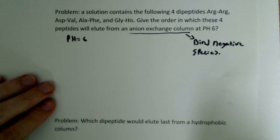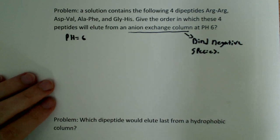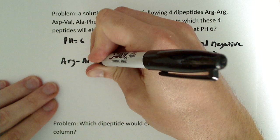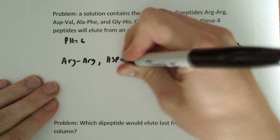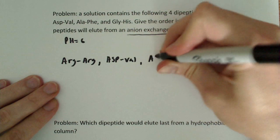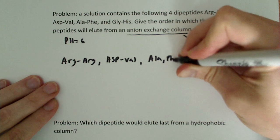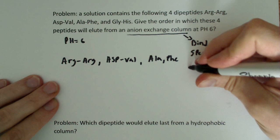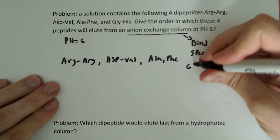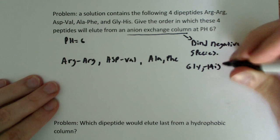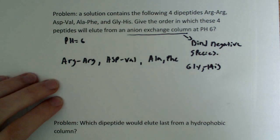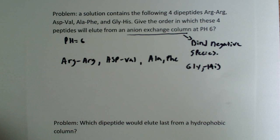Then we want to write down each of the dipeptides. I would do it just like this: arginine-arginine, then aspartic acid-valine, alanine-phenylalanine, and the last one being glycine-histidine. Once I have the four written down, I want to say what is the charge at pH 6?